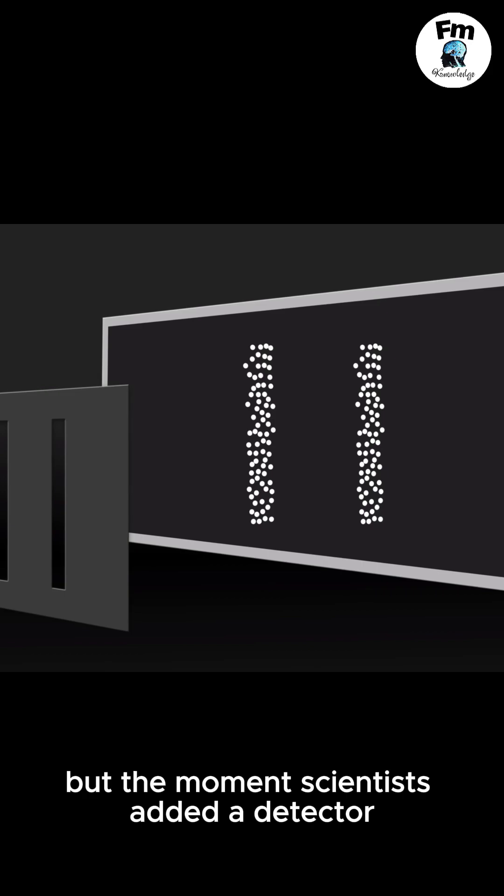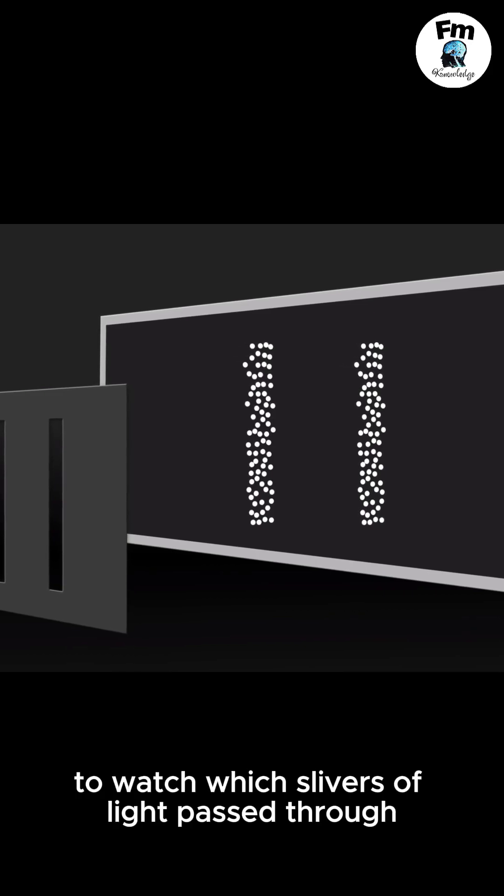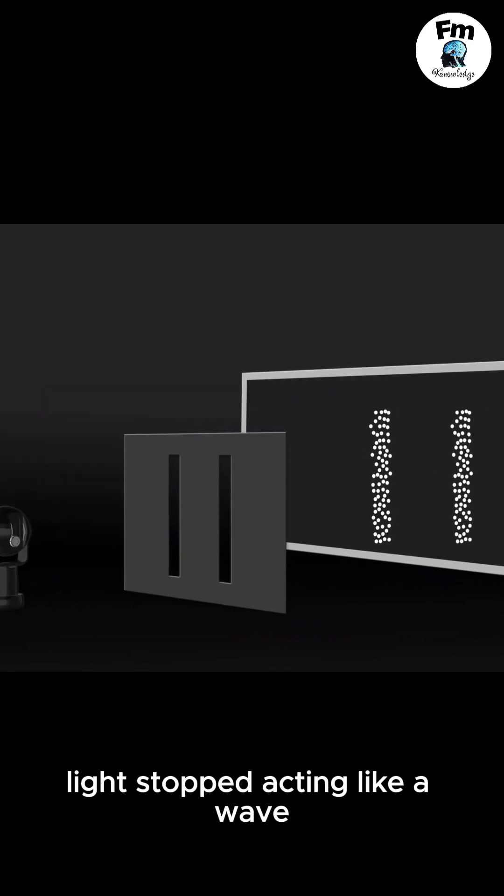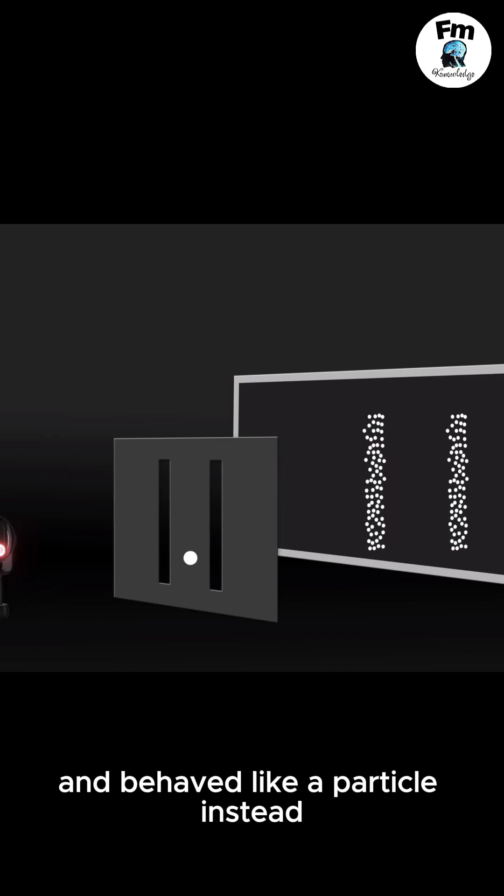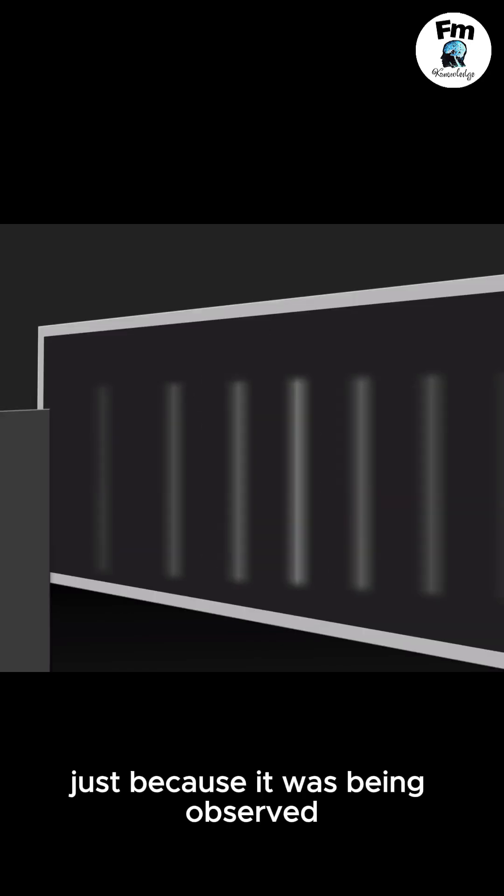But the moment scientists added a detector to watch which slit the light passed through, everything changed. Light stopped acting like a wave and behaved like a particle instead, just because it was being observed.